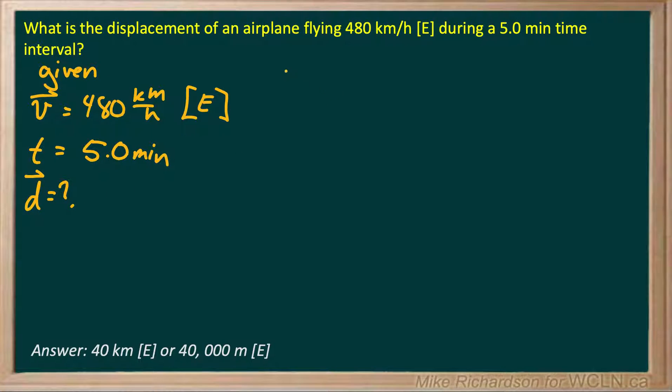Now, the equation that links these three things together is your velocity, your average velocity, is displacement divided by time. So, if I solve this for D, multiplying both sides by T, I get my displacement is velocity times time.